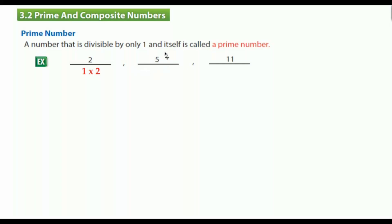What about 5? How many factors does 5 have? Just 1 and 5. Let's see 11. How many factors does it have? Just 1 times 11. These numbers have just 2 factors, which are 1 and itself. Because of that, we call them prime numbers.